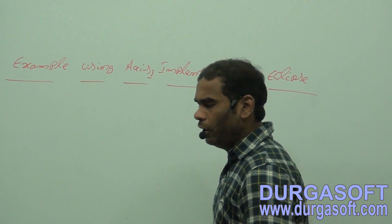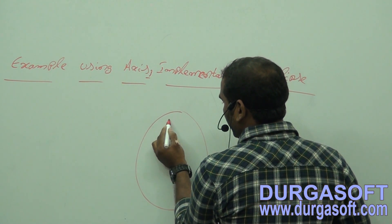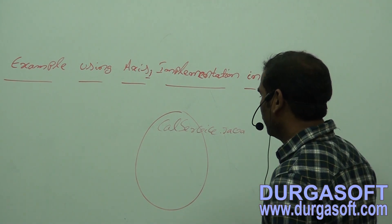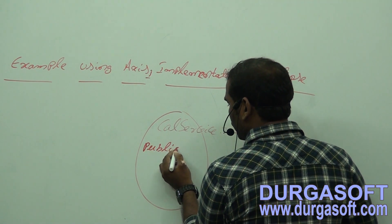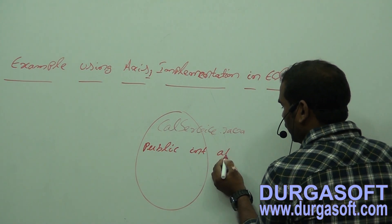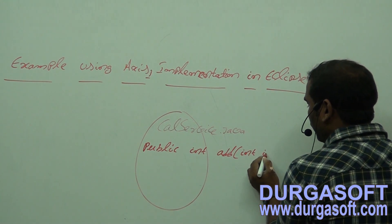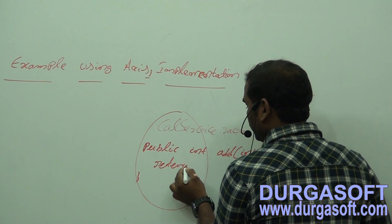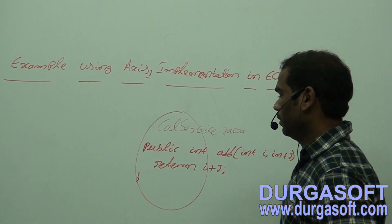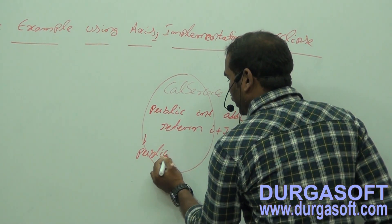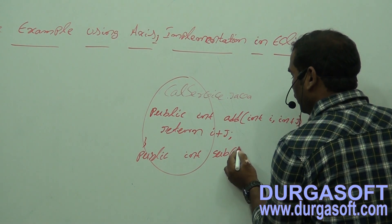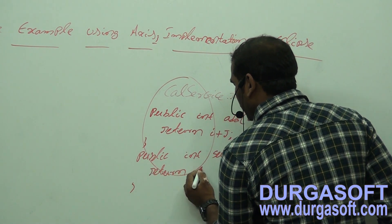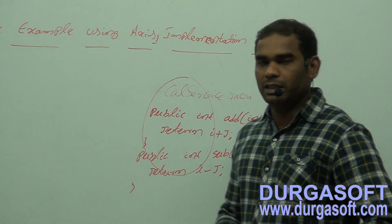I want to develop a very simple web service. I want to develop one service class called CalService.java. Inside this, we want to use one method: public int add(int i, int j), which returns i plus j. And I want to define another method: public int subtraction(int i, int j), which returns i minus j.